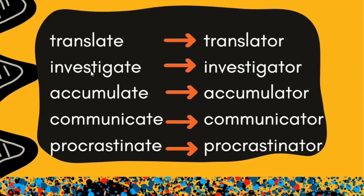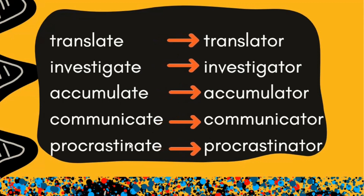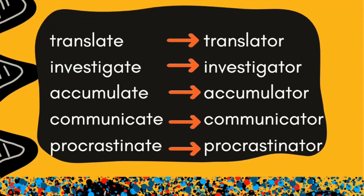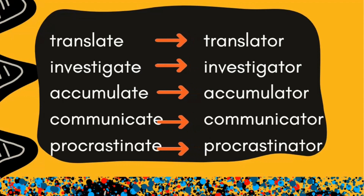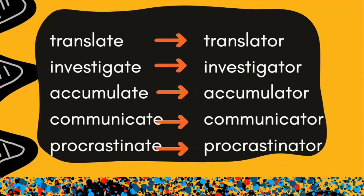So you can make a safe guess — if you can make the word with an ATE ending, you can put OR to make it an agent noun.